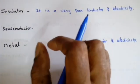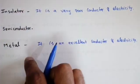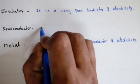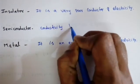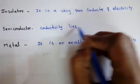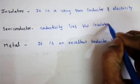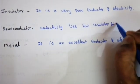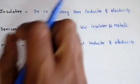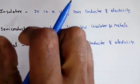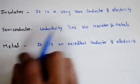In a semiconductor, the conductivity lies between that of an insulator and a metal. We can control the current in semiconductors — depending on some mechanism, we can vary this conductivity.